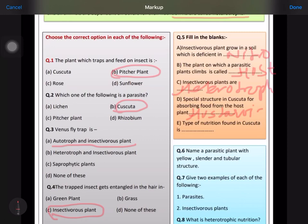Type of nutrition found in Cuscuta is parasitic. Name a parasite plant with yellow tubular stem: it is known as Cuscuta.